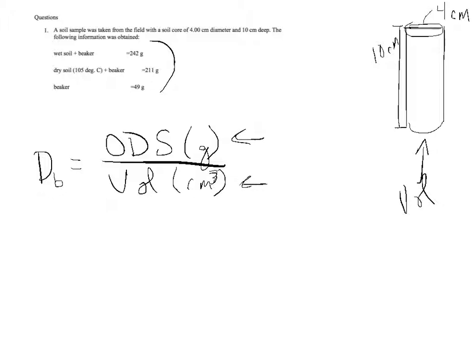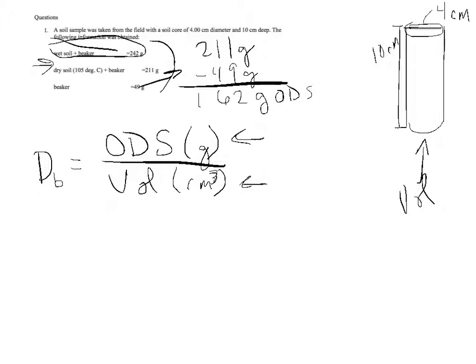Looking at this information, we have more than we actually need. The only thing we need is the oven dry soil weight and the volume. We've got the wet soil plus beaker, dry soil plus beaker, and beaker weight. I'm going to focus on the dry soil. This wet soil information is superfluous, though we can use it to calculate other things later. We take 211 grams of dry soil, subtract out 49 grams for the beaker weight, and end up with 162 grams of oven dry soil.